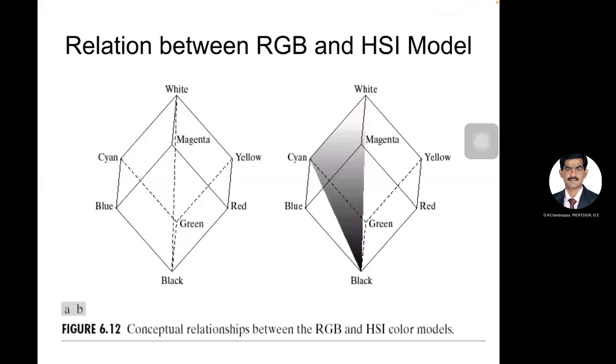Now, the relation between RGB and HSI model. The representation of both RGB and HSI color models. First we'll take that first model. Here all eight colors will be considered: black, white, blue, yellow, cyan, red, green, magenta.